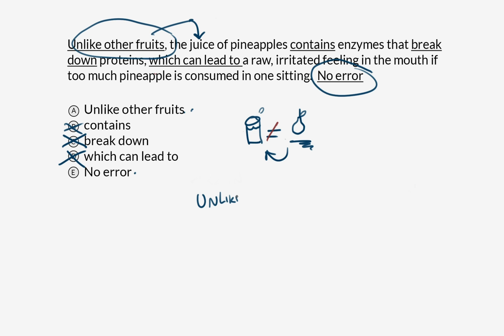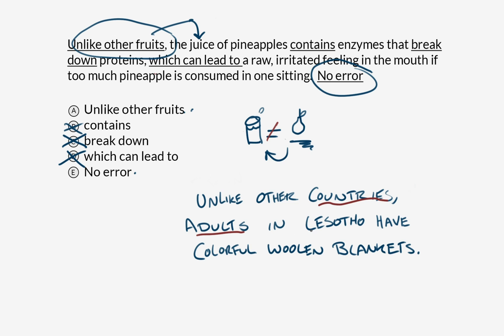A better example might be to compare two more obviously disparate categories, right? Unlike other countries, adults in Lesotho have colorful woolen blankets. I know this isn't true. Obviously, many other people around the world have beautiful blankets. These are called Lesotho blankets. Look them up. They're very lovely. But what this sentence is doing is incorrectly comparing countries to adults in Lesotho. Right? Adults in Lesotho are not countries. Lesotho is a country, but that's not the comparison that this sentence is making.